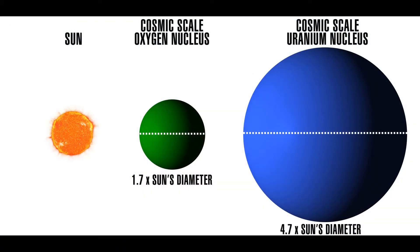The cosmic scale uranium nucleus has a mass 236 times the sun's mass, and a diameter 4.7 times the sun's diameter. Each cosmic scale oxygen nucleus has a mass 16 times the sun's mass, and a diameter 1.7 times the sun's diameter.